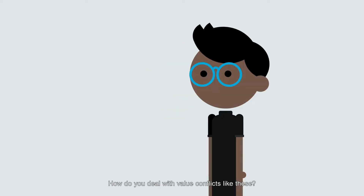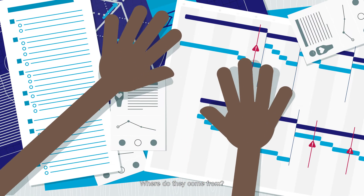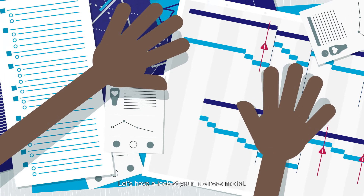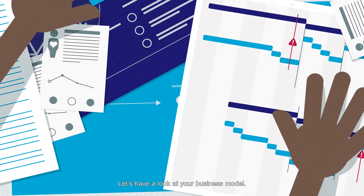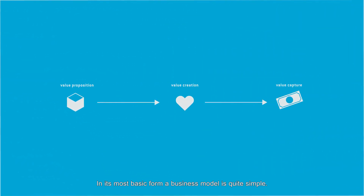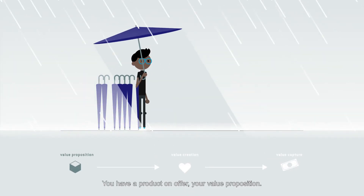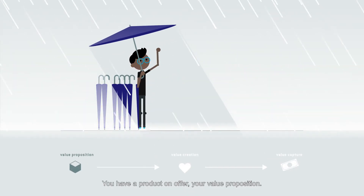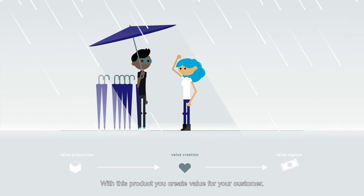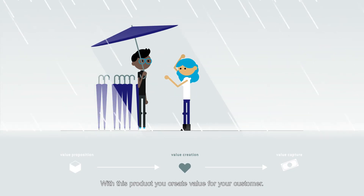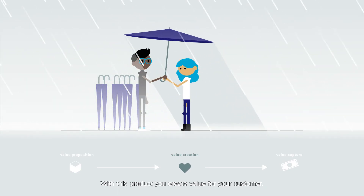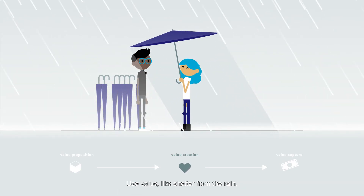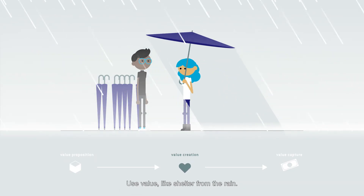How do you deal with value conflicts like these? Where do they come from? Let's have a look at your business model. In its most basic form, a business model is quite simple. You have a product on offer – your value proposition. With this product, you create value for your customer – use value, like shelter from the rain.